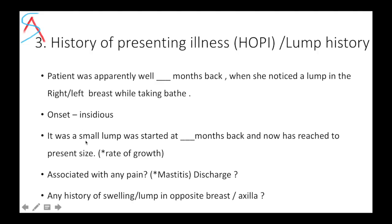Then elaborate that history of lump: what was the onset, what is the rate of growth — you can say it was small in size these many months back and has reached the present size. Most examiners do not like when you compare the size with things like lemon or tennis ball. Now you have to ask about history of pain.